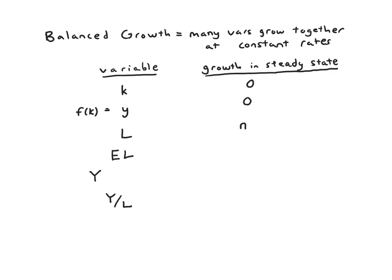Let's remind ourselves the percent change in E times L will be just the sum of the percent change in E plus L. We've used this trick quite a few times. So then we just have to ask, well, we know L is growing at rate n. And we were told at the beginning E grows exogenously at rate g. So growth in E times L will be the sum of those two growth rates, g plus n.